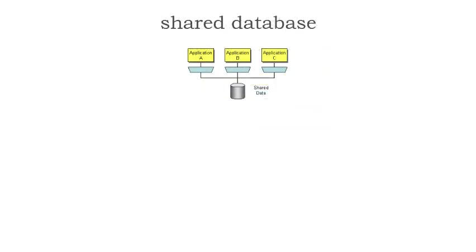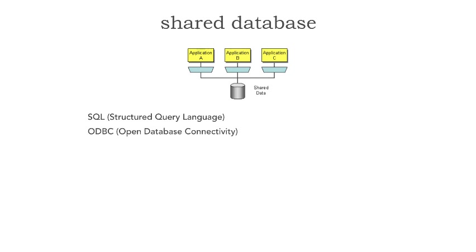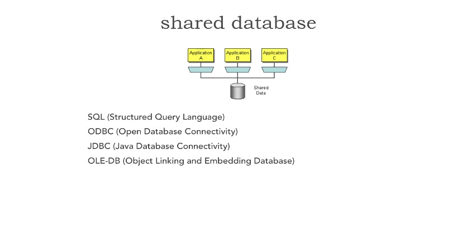When we look at the shared database integration style, we notice we have three applications or three services — application A, B, and C — all sharing the same data context. Applications A, B, and C know nothing about each other. From a protocol standpoint, I know SQL is not a protocol — it's a structured query language — but most of the time when we think of shared database, we think of access to that database as SQL. The actual protocols are ODBC (Open Database Connectivity), JDBC (Java Database Connectivity), OLEDB (Object Linking and Embedding Database), and RDA (Remote Database Access).